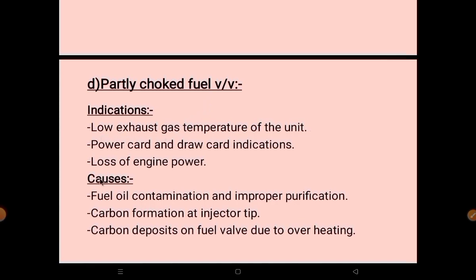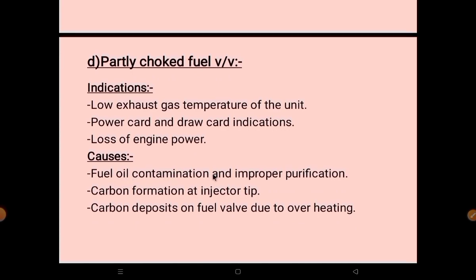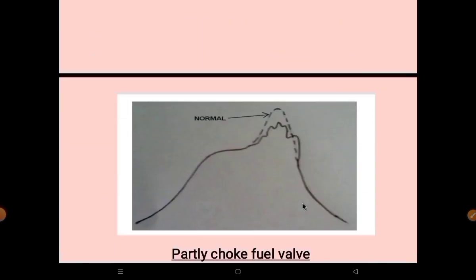The fourth irregularity is a choked fuel valve. Indications seen on the power card and draw card include loss of engine power. The causes are fuel oil contamination, improper purification which may choke the fuel valve, carbon formation at the injector tip, and carbon deposits on the fuel valve due to overheating. A normal diagram shows a smooth curve, but a choked valve produces an irregular shape.